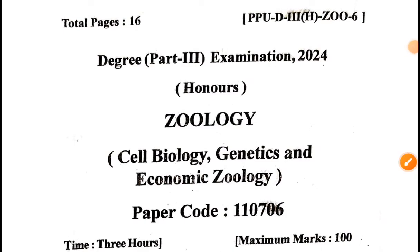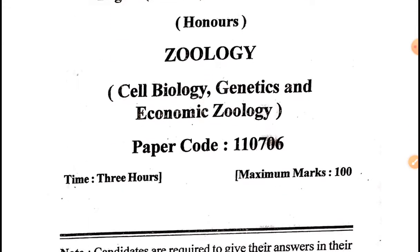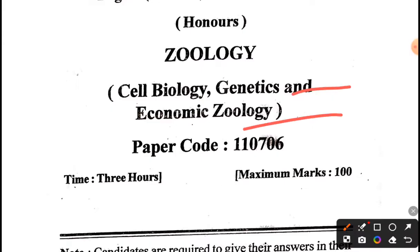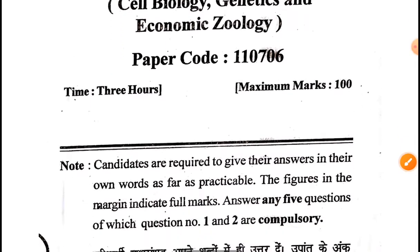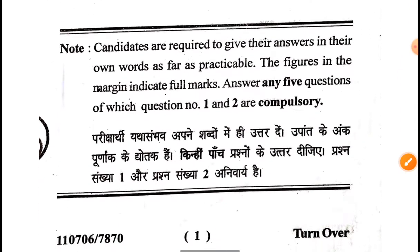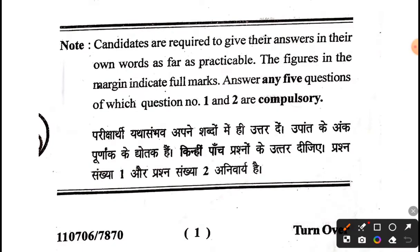Hi everyone, in this lesson we are going to discuss about the Geology Honours Paper 6 examination that was held today in the morning session. This is midnight and I am recording the lesson right now, so it will just take two to five minutes. The paper was on cell biology, genetics, and economic geology sections, consisting of 100 marks. The instruction given was to answer any five questions, with questions one and two being compulsory.